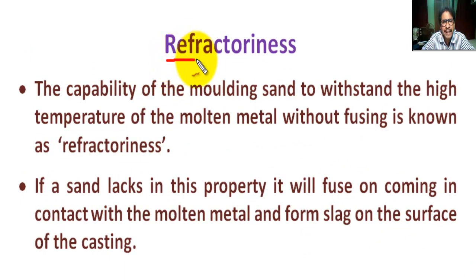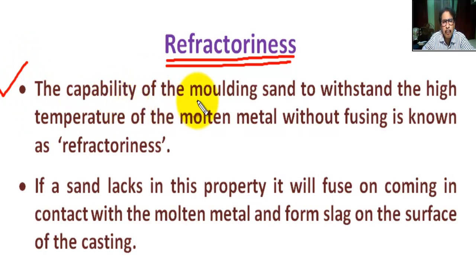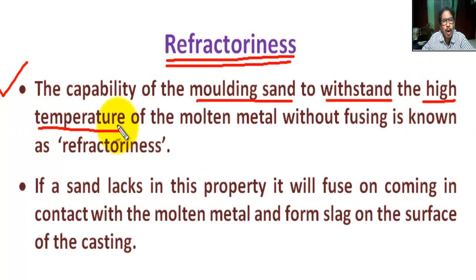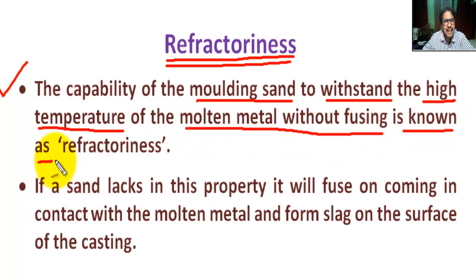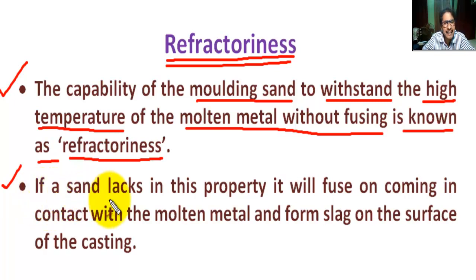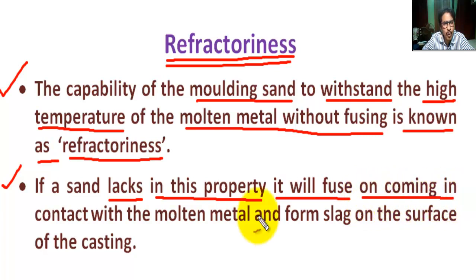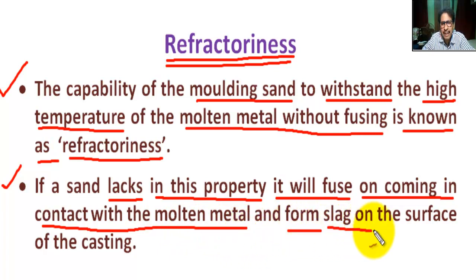Next property: what is refractoriness? The capacity of the molding sand to withstand the high temperature of molten metal is known as refractoriness. If a sand lacks this property, it will fuse on coming in contact with the molten metal and form slag on the surface of the casting.